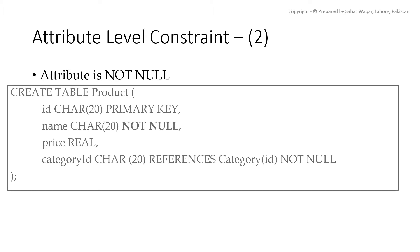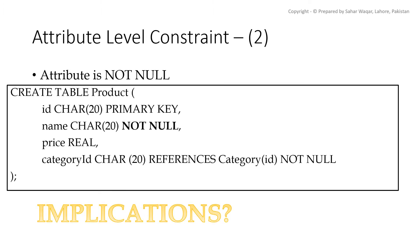Here we have modified our product table definition a little. We have also added a NOT NULL constraint on the category_id attribute of the product table, which is also related to the category table as a foreign key attribute. So we now have two constraints on this attribute. Can you think of the implications or effects of adding such a constraint on your application?